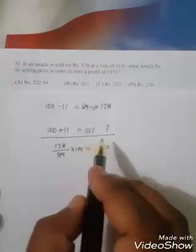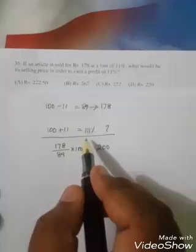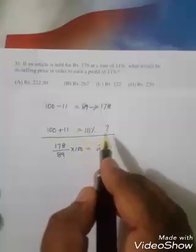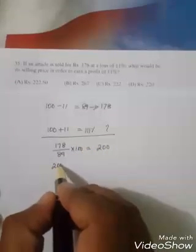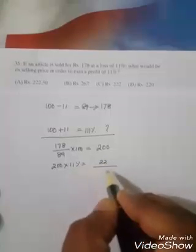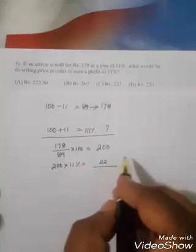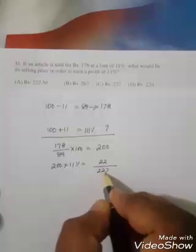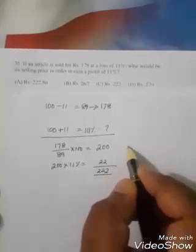Then the answer we want is we have to add profit of 11%. That means 200 times 11% equals 22. So the required selling price is 222. Answer is C.